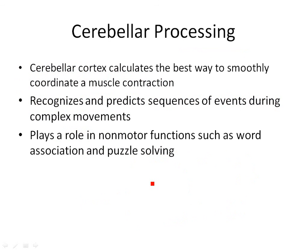What does the cerebellum do? It calculates the best way to smoothly coordinate a muscle contraction. If you have cerebellar damage, you may have jerky movements or an unsmooth gait when you walk. It allows you to recognize and predict a sequence of events during a movement — for example, to catch a baseball you know you've got to see the ball, put your arm up, put your hand out, grasp the ball, and bring it in. You don't close your hand before the ball gets there. It also plays a role in problem solving and word association.